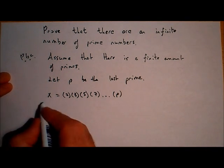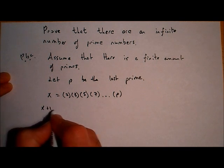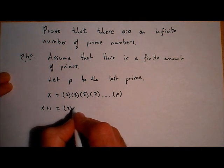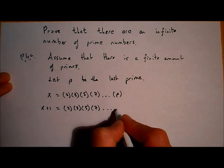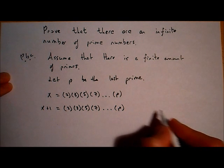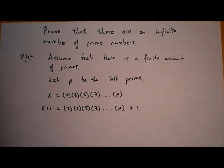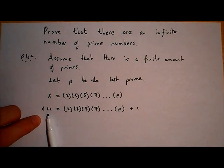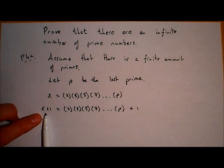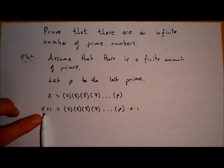Now let's make another number. Let's add 1 to X. So X plus 1 would be the number: 2 by 3 by 5 by 7, all the way up to P, and then plus 1 at the very end. The fundamental theorem of arithmetic says every number is either prime or can be made by a unique product of prime numbers. So is it possible to make X plus 1 by multiplying prime numbers together?